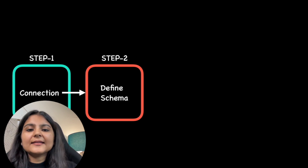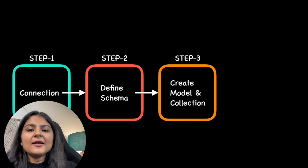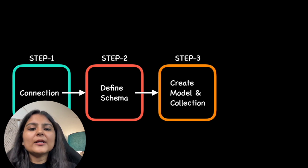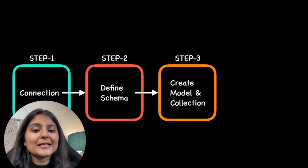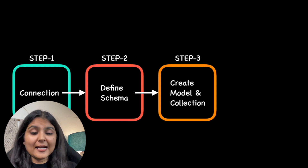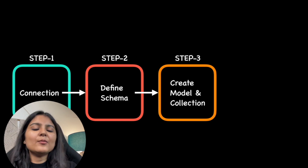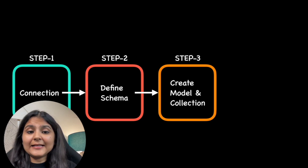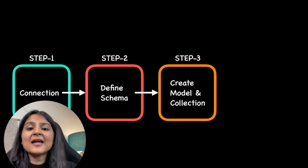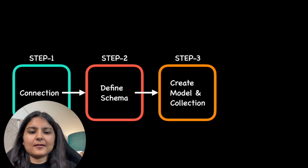In step three, we use that schema to create a model. A model is a tool that helps us interact with the MongoDB collections — with this model we are able to perform actions like Create, Read, Update, and Delete to make modifications to our documents. In this step, our collection also gets created automatically.